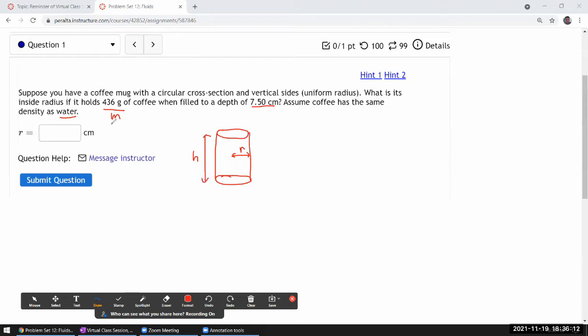So we know mass, we know height, and we are being asked for radius.